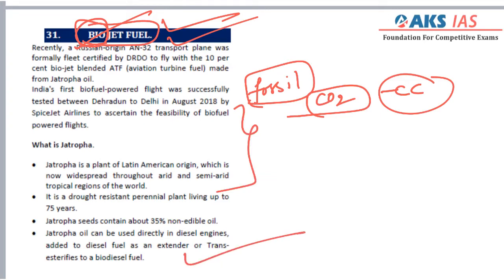The bio-jet fuel was extracted from jatropha, which is a plant that contains 35 percent non-edible oil. From this non-edible oil, the bio-jet fuel has been extracted. The details are given in the material.